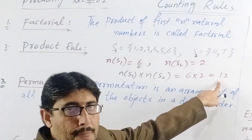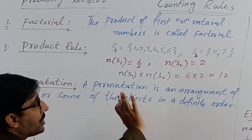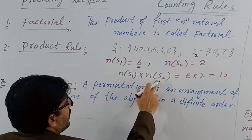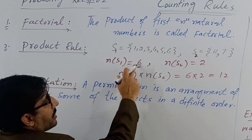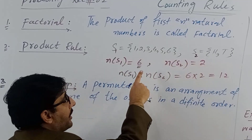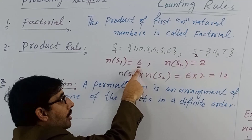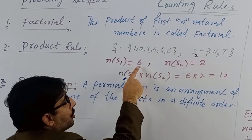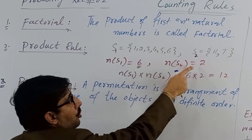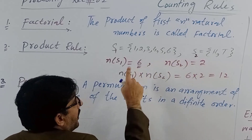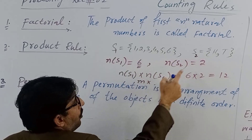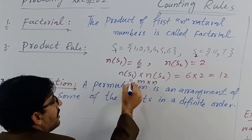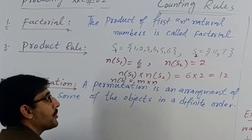To generalize: if we call one experiment's outcomes M and the other experiment's outcomes N, where both have mutually exclusive and equally likely events, then the total number of sample space outcomes for the compound experiment is M multiplied by N.